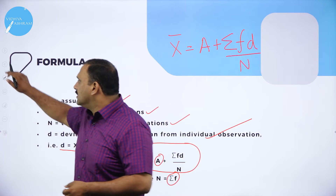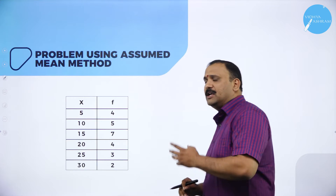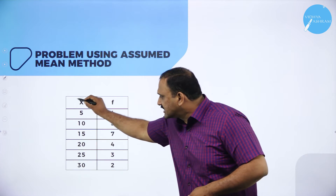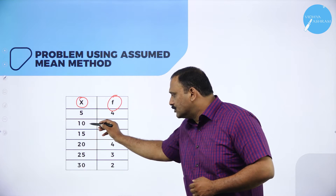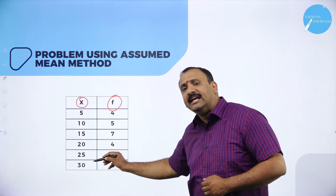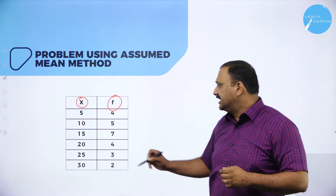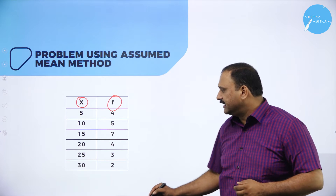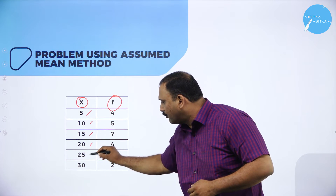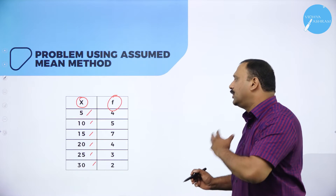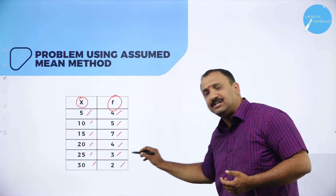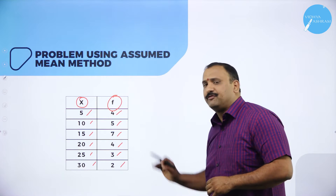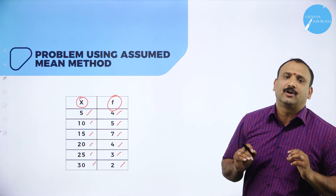Let's look at a problem. You have an X column and an F column, where F stands for frequency. The X values are in multiples of 5: 5, 10, 15, 20, 25, and 30 — giving 6 variables. The corresponding frequencies are 4, 5, 7, 4, 3, and 2. So the problem gives you the variable factor X and the frequency F in a tabular column.